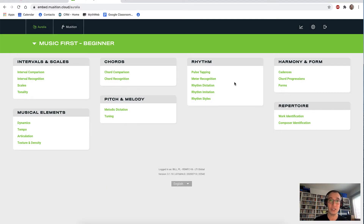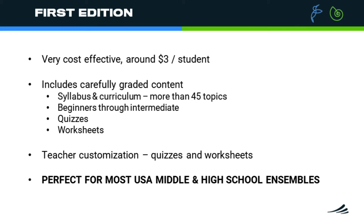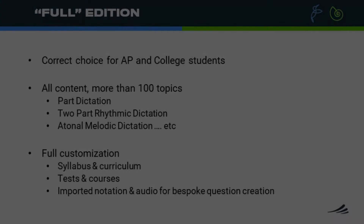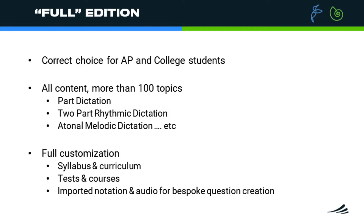I have mentioned the first edition a few times now, so let me briefly explain what I mean. Our first edition has been specially designed for Music First — it's a very cost-effective way to use Aurelia and Musician in your elementary and high schools with lots of students. The full version, which has all the content and customization, is used for AP Music Theory and college level. However, it's not uncommon for schools to use a mix of both first and full with their students.